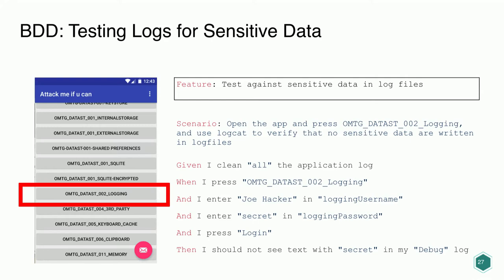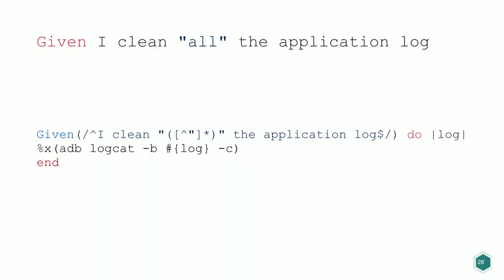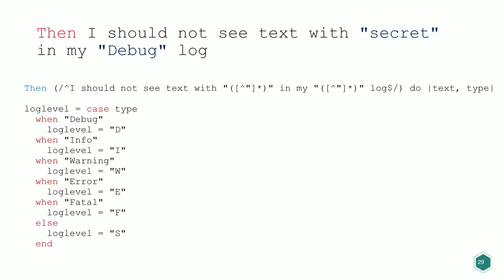The BDD test looks like this: 'Given I clean all the application logs' — a precondition that deletes all logs from the emulator so we test in a clean environment. Then we automate the UI. The last step checks that no sensitive information is written to the log files. In the step file, the 'given' statement calls the Android Debug Bridge to clean all logs, passing the keyword 'all' to the function.